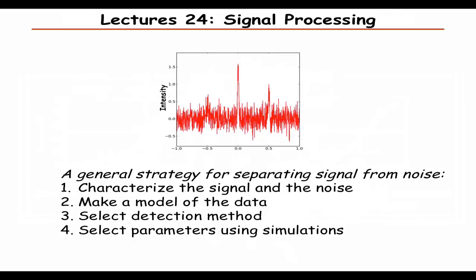The 24th lecture will be on signal processing — the case when you can represent your measurements as noise plus a few peaks. In this case we can probably see three peaks, but the last one is difficult to discern because it's very close to the noise level. You learn a general strategy for how, from a measurement like this, you can characterize and separate the signal from the noise — by knowing the properties of both signal and noise, building a model, then picking a detection method and simulating to set the thresholds and parameters.